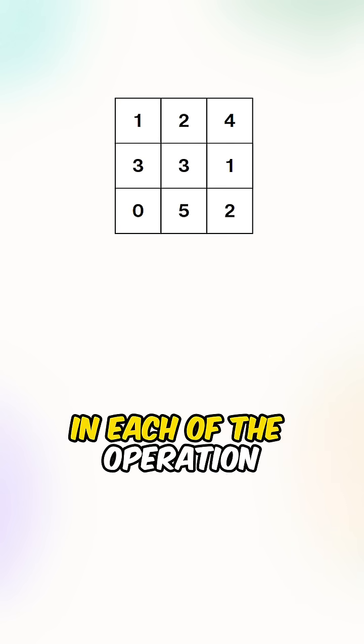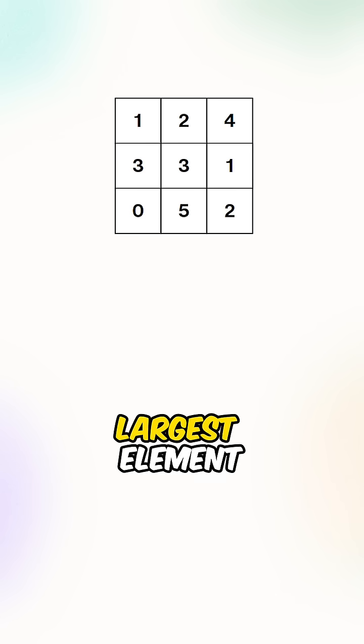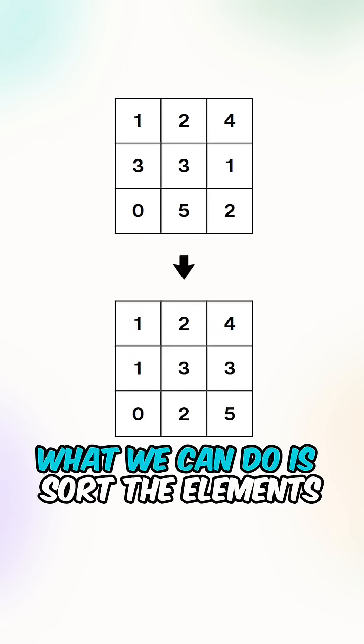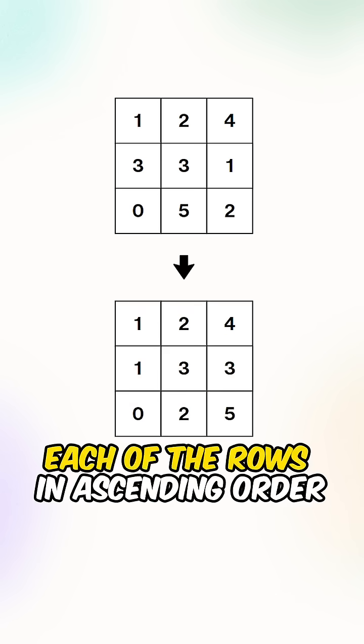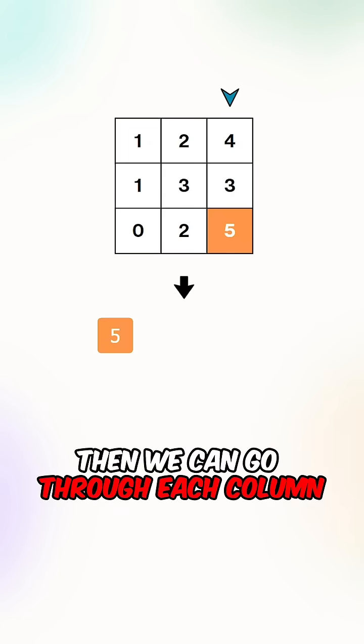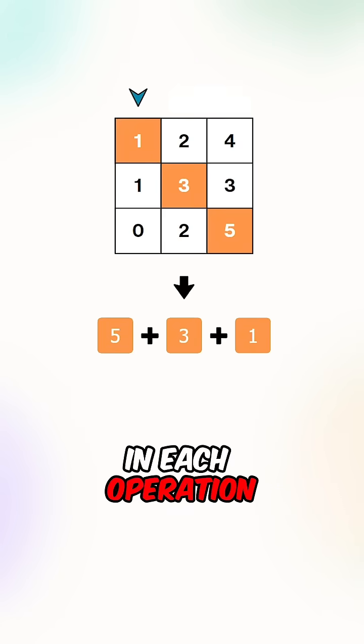Let's go over the thought process. In each of the operations, we want to find the largest elements in each of the rows. What we can do is sort the elements in each of the rows in ascending order. Then we can go through each column to retrieve the largest value in each operation.